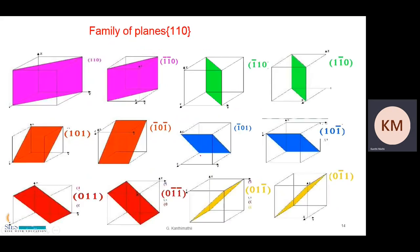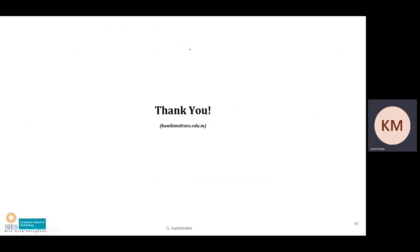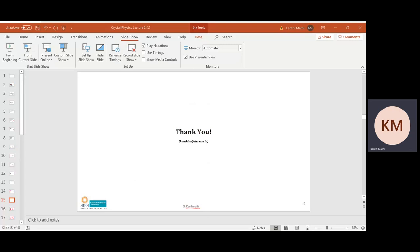The family {1 1 0} represents all twelve planes. For example, (1 1 0) is the same as (1 0 1) if the axis representation xyz is changed. Similarly, bar representations are also included — if the origin is shifted, (1 1 0) becomes (b̄1 1 0). All these twelve planes pass through the face diagonal and belong to this one family. I hope everyone understood how to draw a plane using Miller indices representation; the remaining part we will see in the next lecture.